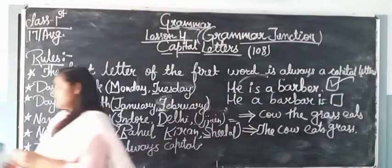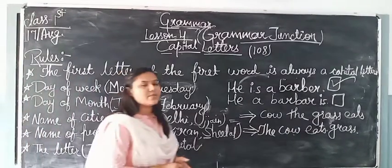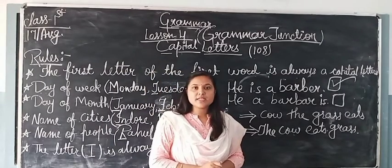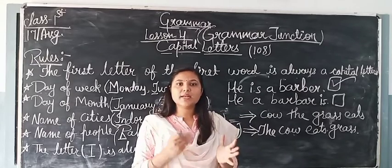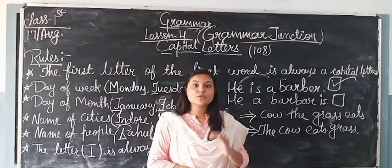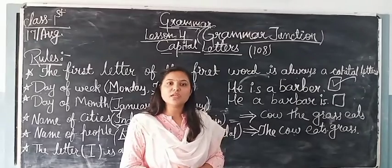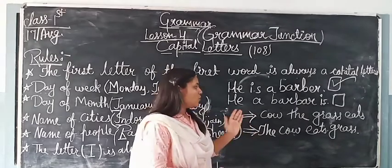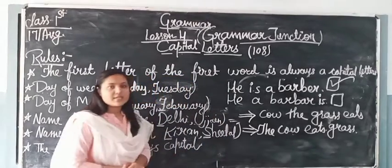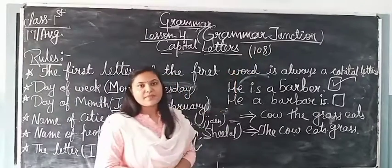So students, in this chapter we have covered capital letter rules and sentence making. We have learned the rules of capitalization. A sentence is a group of words that makes sense. If a sentence is incomplete or does not make sense, it is incorrect. I hope this topic is clear to you. This topic is present in your book on page number 108. Have a good day.